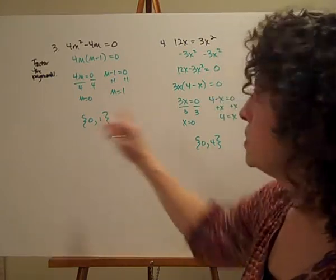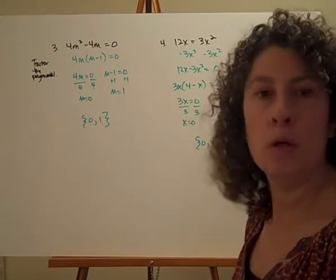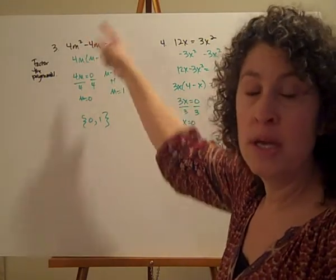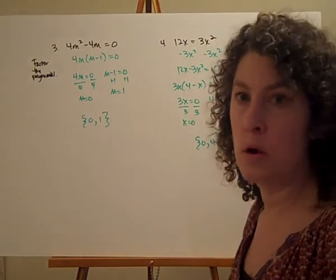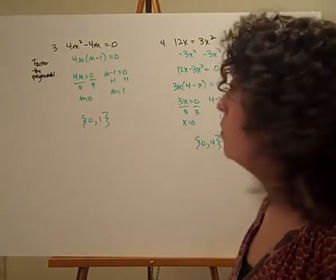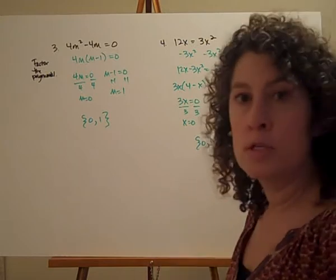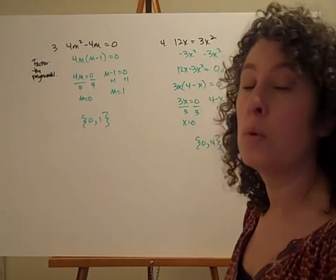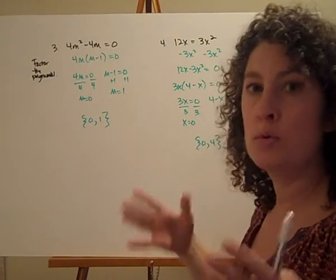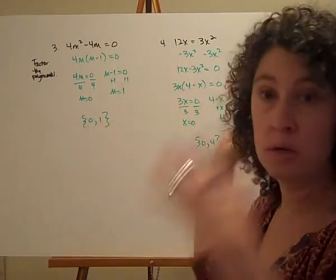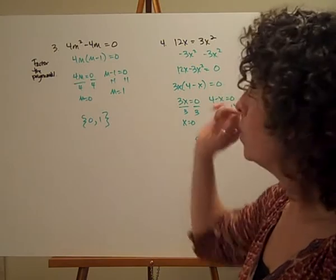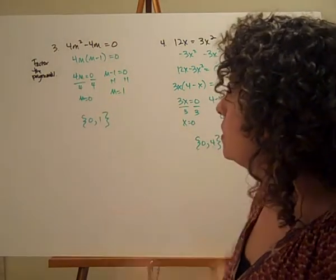Notice that we come up with two solutions for both of these. When we started talking about polynomials, we talked about the degree — this is where that comes into play. The degree of the polynomial tells you how many possible solutions there are. Each of these has a degree of 2 and there are two solutions. There may be only one solution, or no solution that works, but the maximum number of solutions equals the degree of the polynomial. Our steps: set the equation equal to zero, factor the polynomial, then set each factor equal to zero.